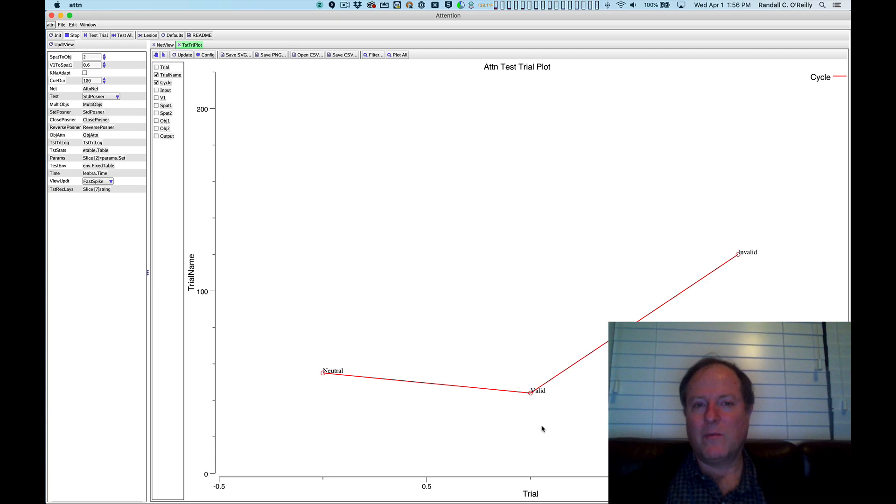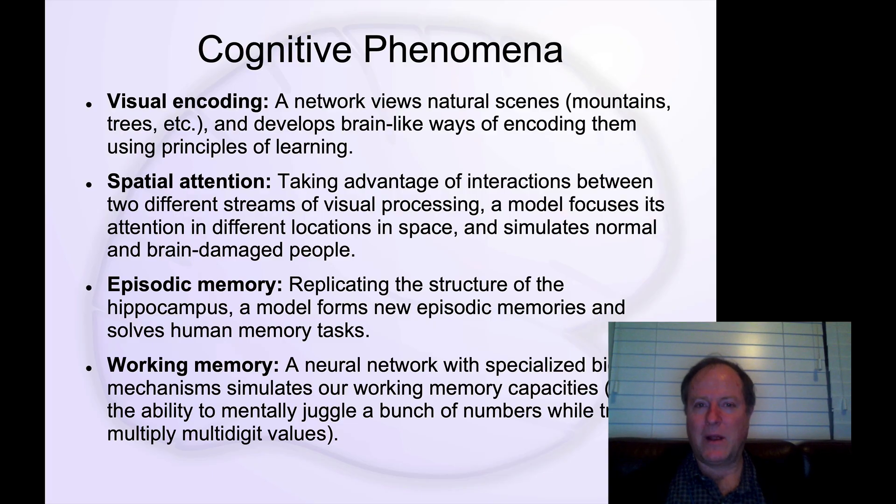And because our models are based on the biology of the brain, it gives us that ability to understand how individual neurons working together in the brain actually produce these different effects. And so we can understand effects of brain damage, we can understand effects of drugs. It really gives us an extra dimension that we can use to apply what we've learned about these models to understand things that are happening to real people in the world.